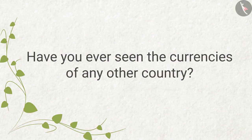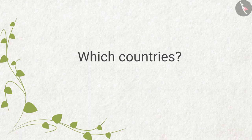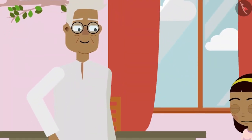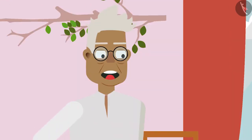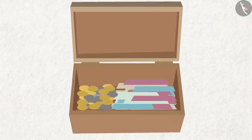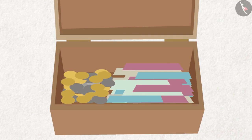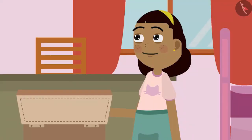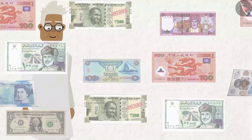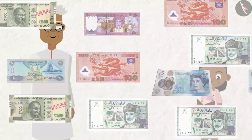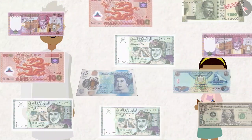Grandpa asks again which countries she'd like to know about, then puts a box in front of Zia. 'What's this, Grandpa?' He explains: 'I collect currencies from different countries — all of them are in this box. Let's see them one by one.' Zia says, 'Sure, Grandpa! But before that, let me draw a table so I can record the names of the currencies of different countries.' Zia makes a table and grandpa begins telling her about the notes one by one.